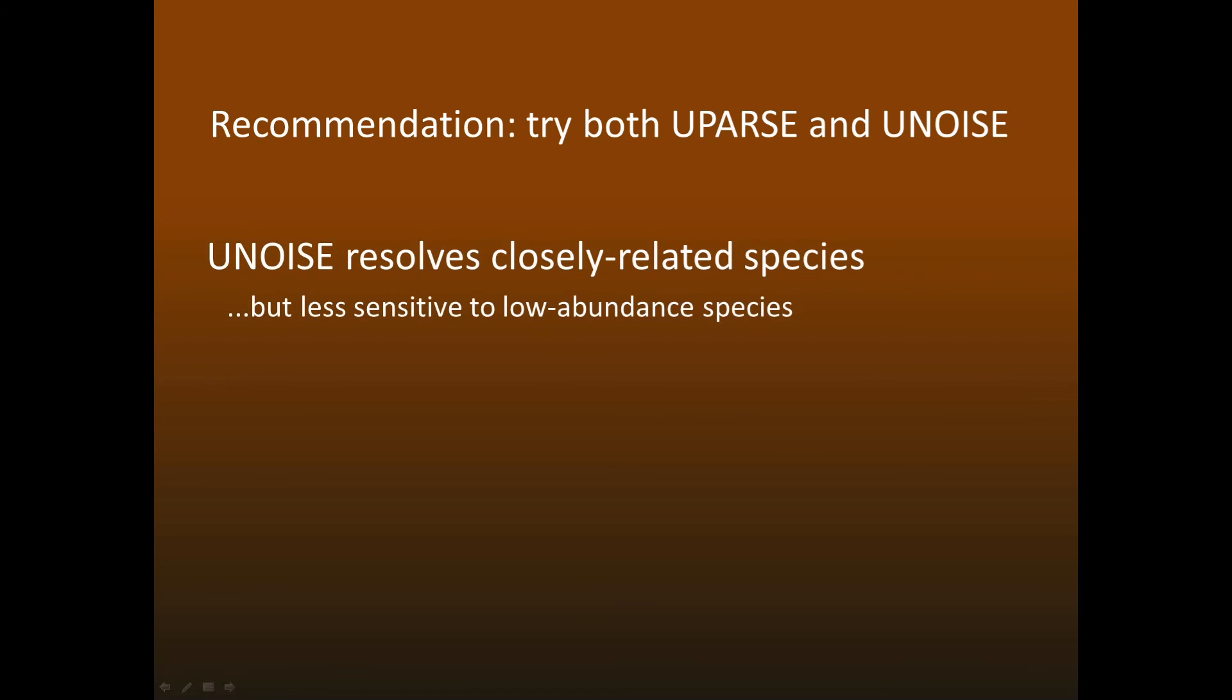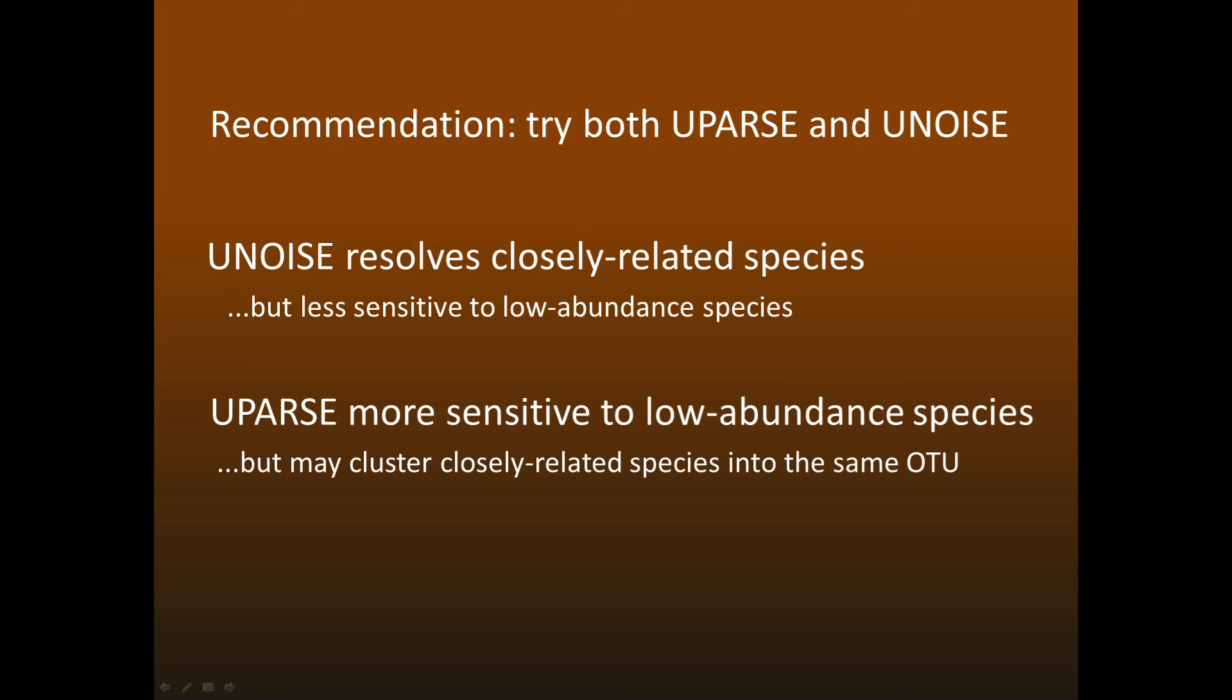UNOISE has the advantage that it is more sensitive to closely related species. But this comes at the expense of being less sensitive to low-abundance species. On the other hand, UPARSE is more sensitive to low-abundance species. But may lump closely related species together into the same OTU.